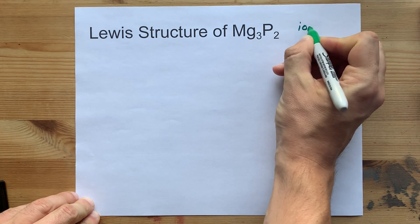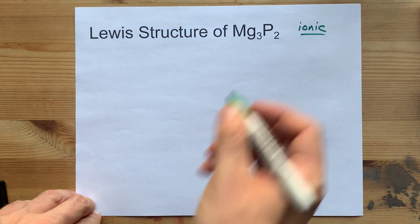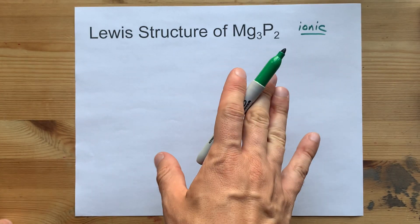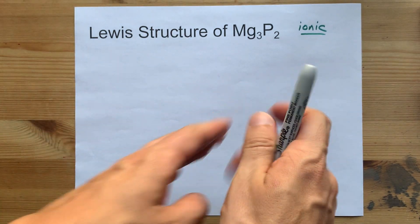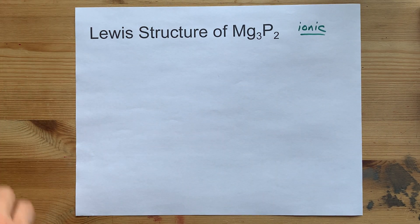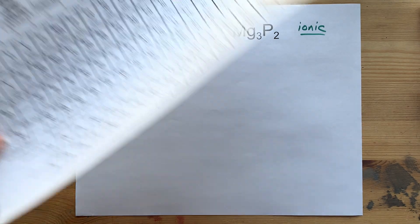Metals and non-metals combine to make ionic compounds, which means there's a transfer of electrons. The metals are going to give away their electrons to the non-metals. Let's investigate further.